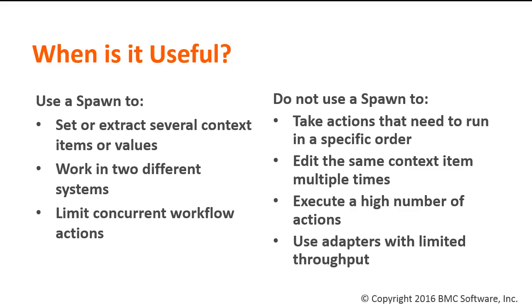Because each spawn has a hard-coded number of paths, you can also use it to limit a workflow's activity. You could use a spawn to take the first four values from your input and run them at once, instead of using a for loop to run them one at a time.